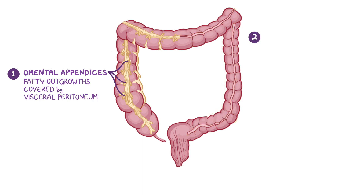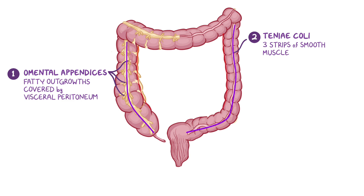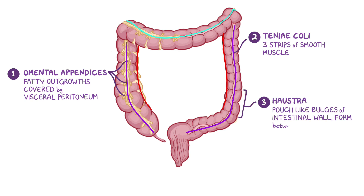Second, there are the teniae coli, which are three strips of smooth muscle that run lengthwise from the base of the appendix through the colon and merge at the rectosigmoid junction to form a longitudinal layer around the rectum. The third and final differentiating feature is that the large intestine has haustra, which are pouch-like bulges of the intestinal wall that form between the teniae when they contract.